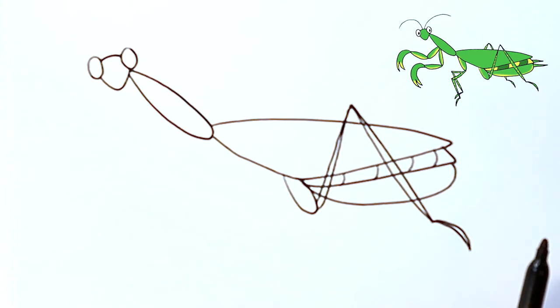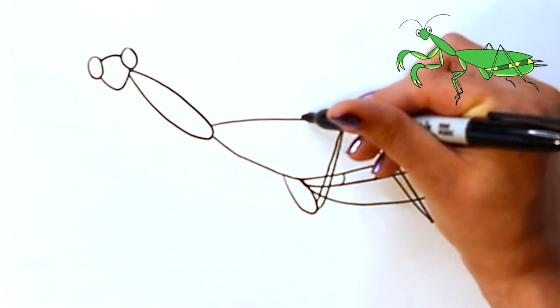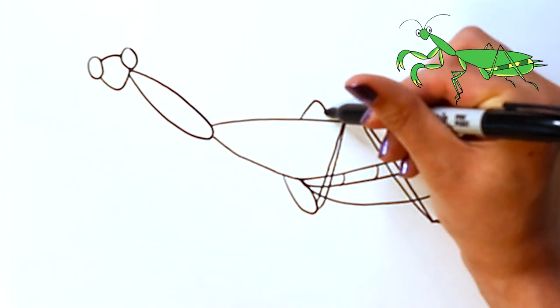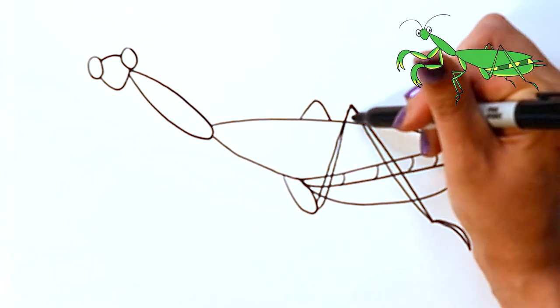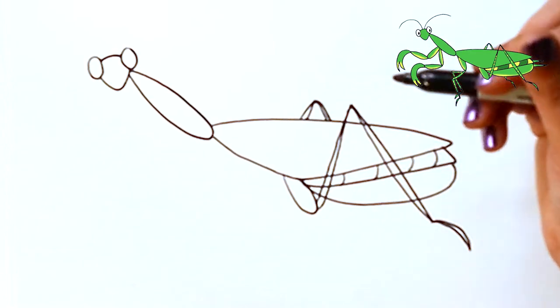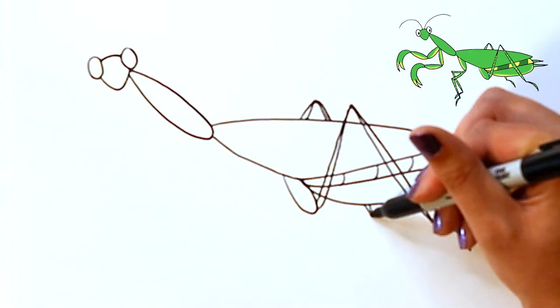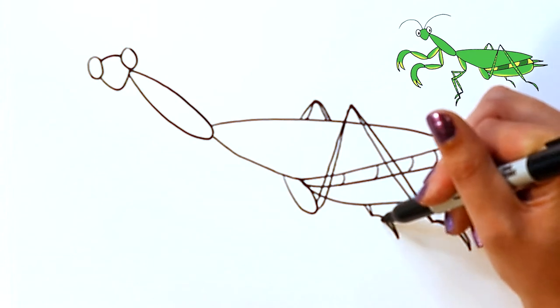Let's do the other back legs and then we will do the front claws. For the other back leg, you're just going to go a little bit over from here, make that upside down V shape because it's like the other leg on the other side, thicken it a little bit, and then the other leg and foot you would just see a little bit there and that foot there.